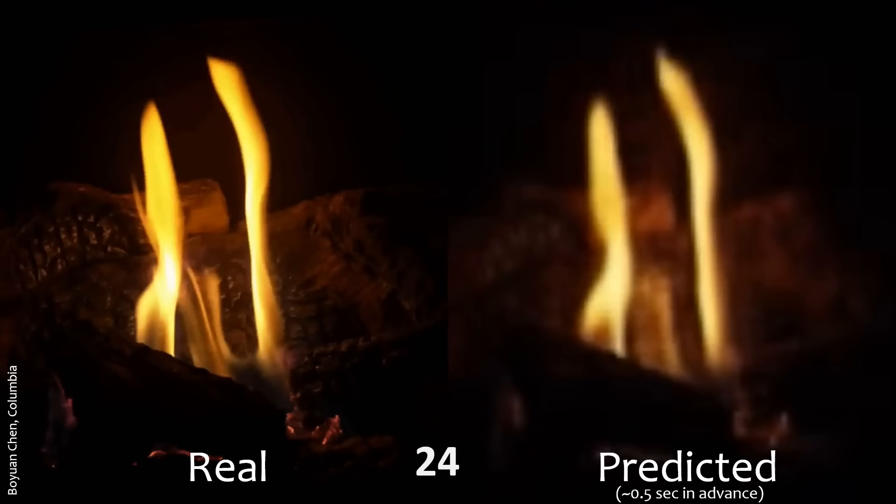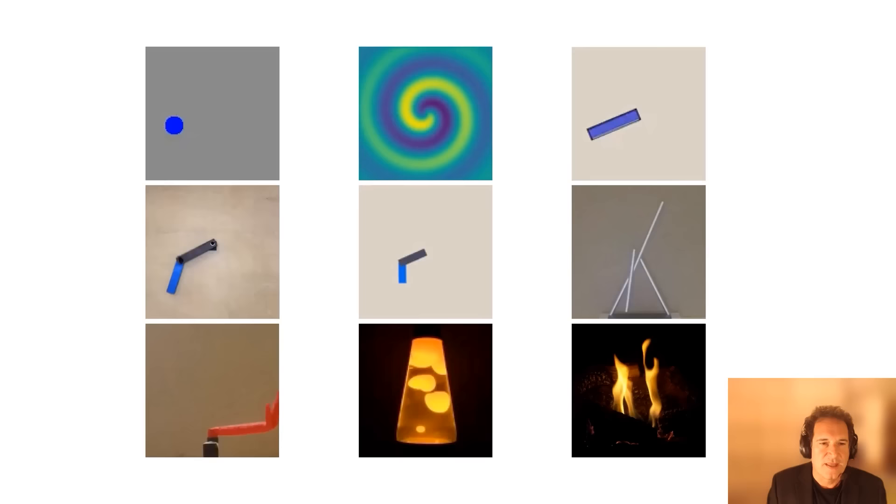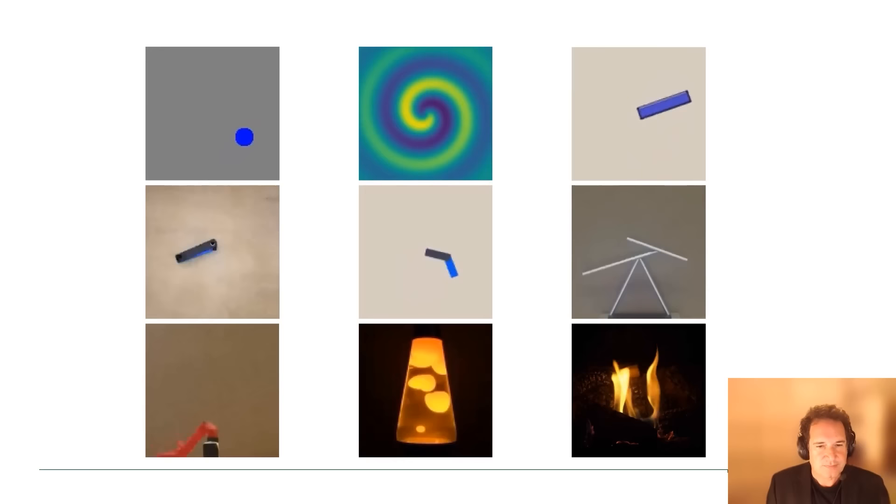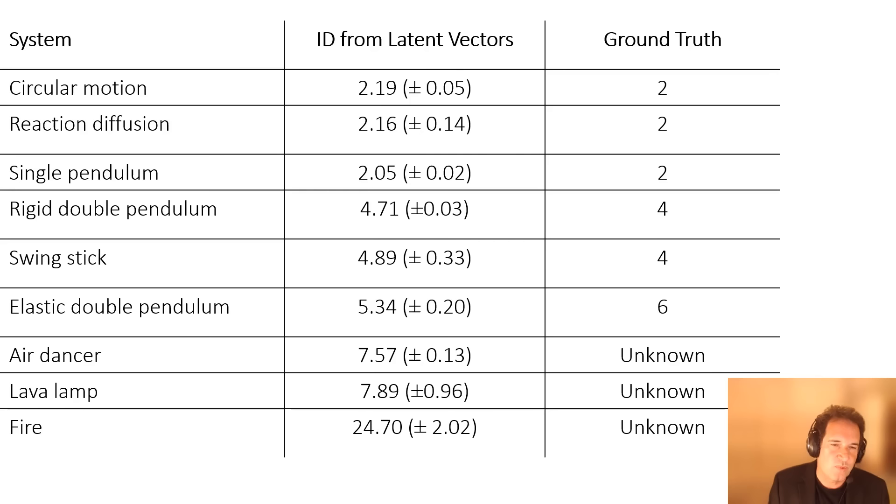We did that for nine different dynamical systems: the fire, lava lamp, elastic double pendulum, stick swing, all kinds of things. Some of them we know the answer and some we don't. For those we know the answer, it found it pretty closely. For those we don't know the answer, we can only say this looks reasonable. It sounds reasonable that a fire is slightly more complex than the lava lamp and air dancer.